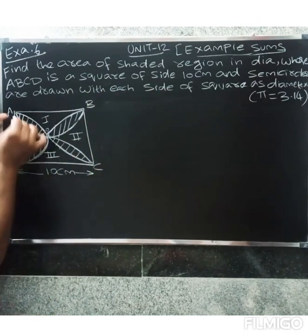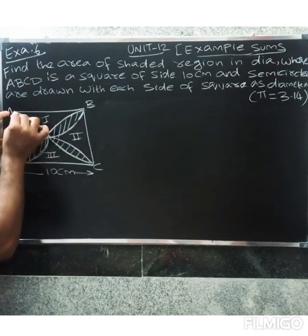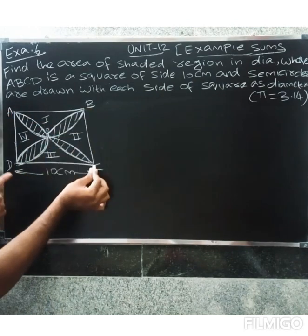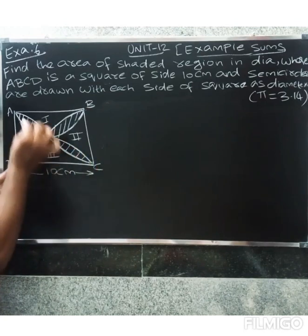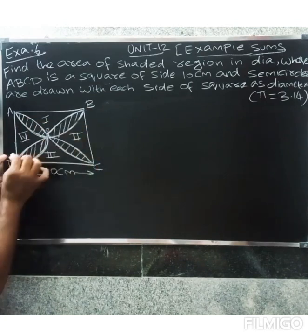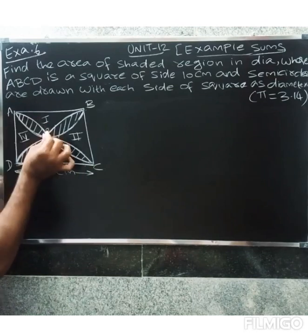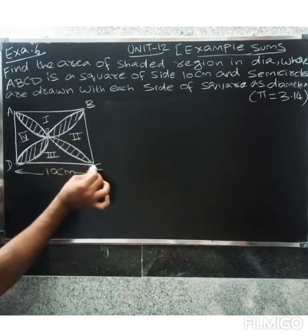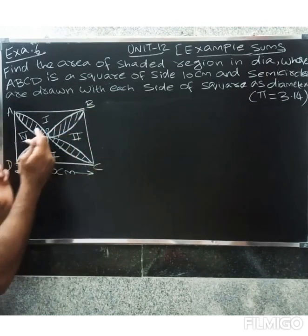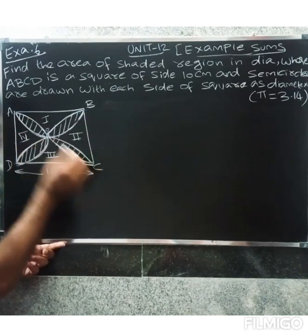The first semicircle is semicircle AOB. Again, semicircle COD — here is a semicircle going up, and a semicircle going down. That is semicircle AOD, and here is semicircle AOC — the right-side semicircle. So we have top, bottom, left, and right semicircles.